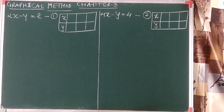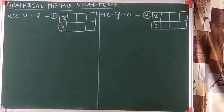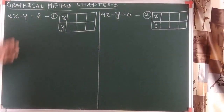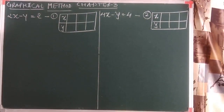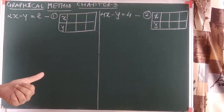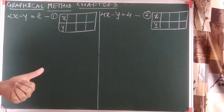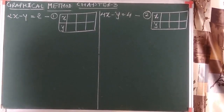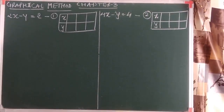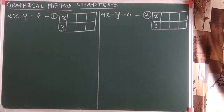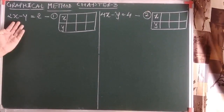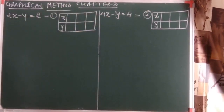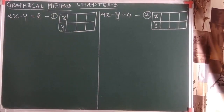Let's start with the fourth method, called the graphical method — by using a graph we can find out the solutions. Again there are three types of solutions: the solution can be a point, it can be infinitely many points, or the lines are parallel which means no solution. So here we have two linear equations in two variables, and one by one we will get the solutions and represent them on the graph.